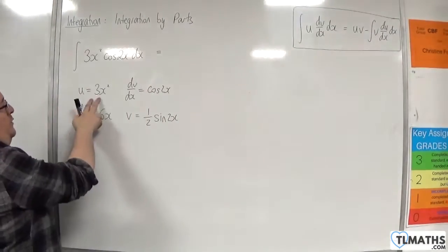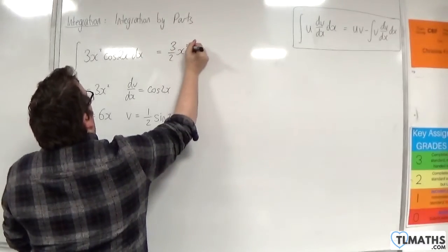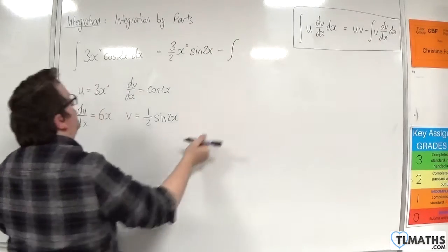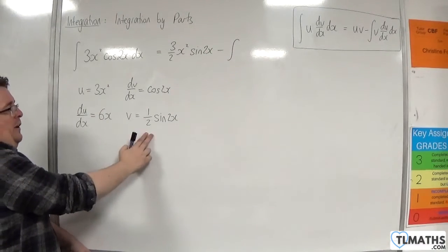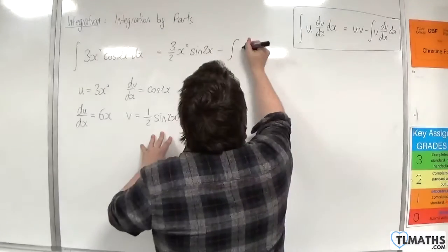So we have u times v. So 3 halves x squared sine of 2x. Take away the integral of v times du by dx. So 6 times a half is 3. So we'll have 3x sine 2x.